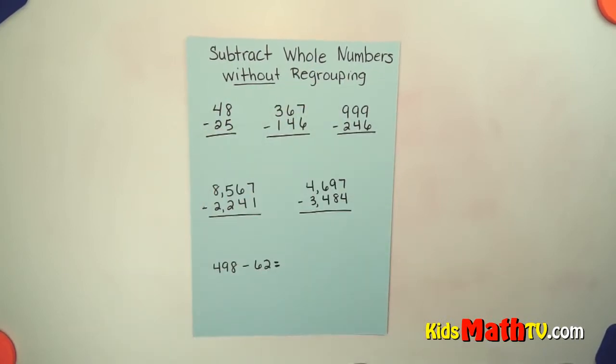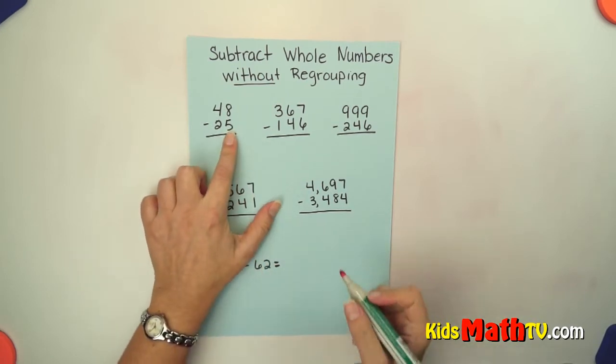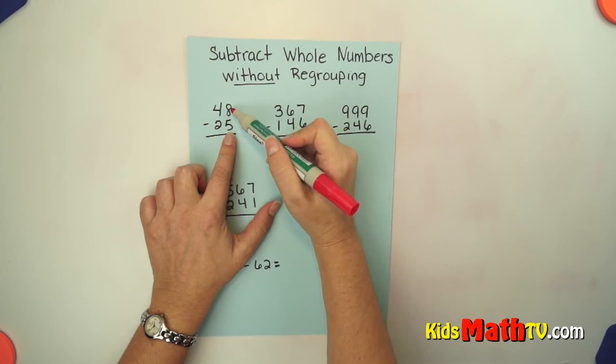If we start off with our first problem we have 48 minus 25. We look at our ones place first.